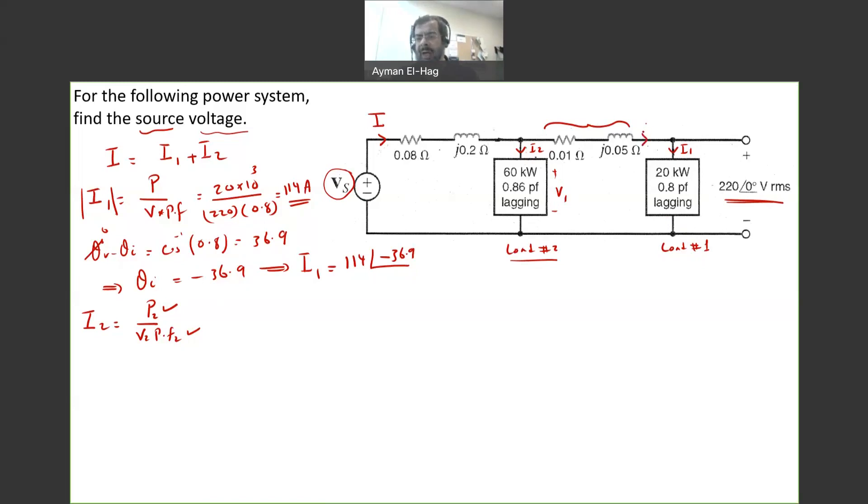So we need to find this voltage. I will call it V2. So here we will have I1 that goes through this impedance, and then we will find V2 once we know, sorry, V1. So once we know V2, then we can find I2 from this formula. So now, KVL. We need to find V2. How? We will apply KVL.